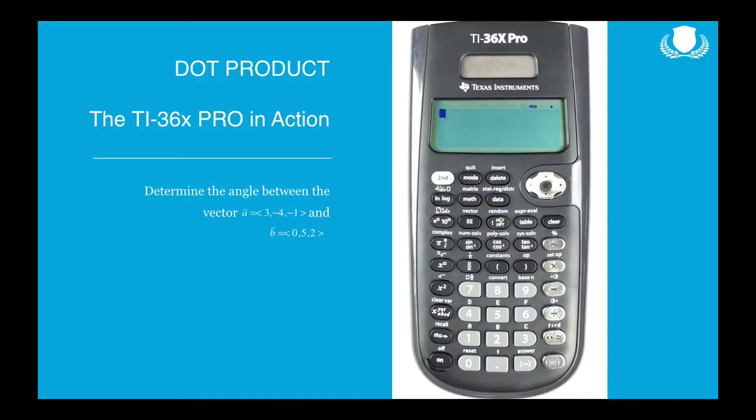So what I actually want to do is bring over part of one of our workshops and just show you how I solve an actual different problem. And if you look, the problem is determine the angle between the vector A and B. Those are different components. But I want to show you how I actually do it on my TI-36X Pro. So I'm going to go ahead and mute this out. I'm going to press play. And we'll see what it all looks like in action.